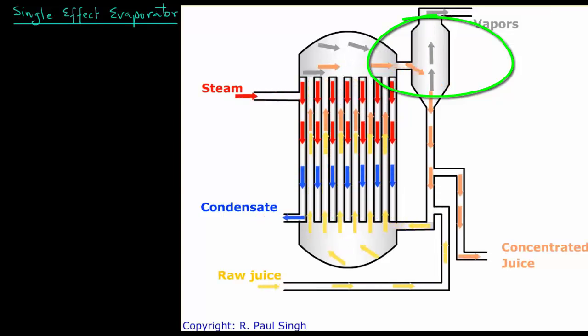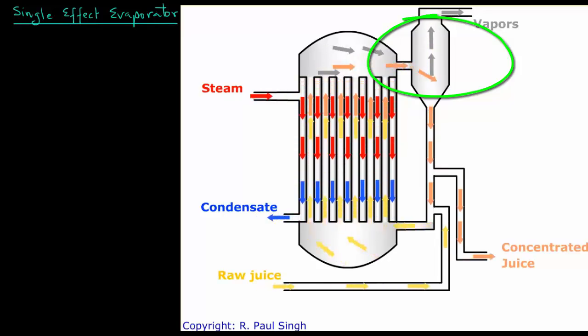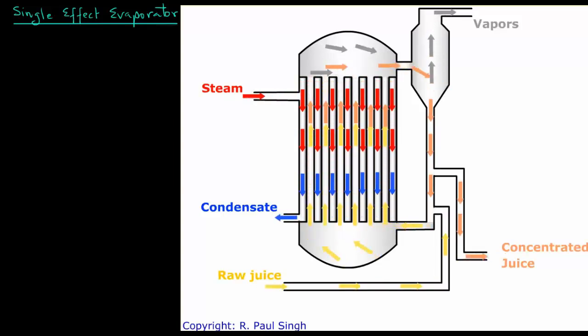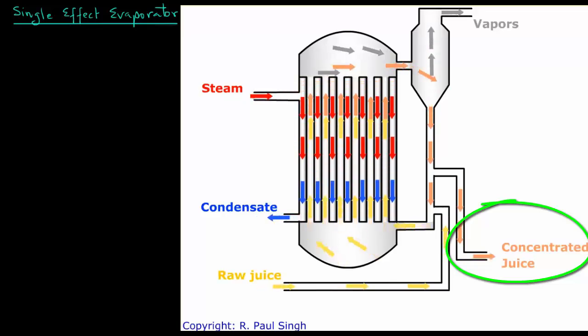The vapors will then leave on the top and the liquid will again enter the bottom of the evaporator section. As the liquid gets concentrated, it can then also be removed from the evaporator on the side as concentrated juice.